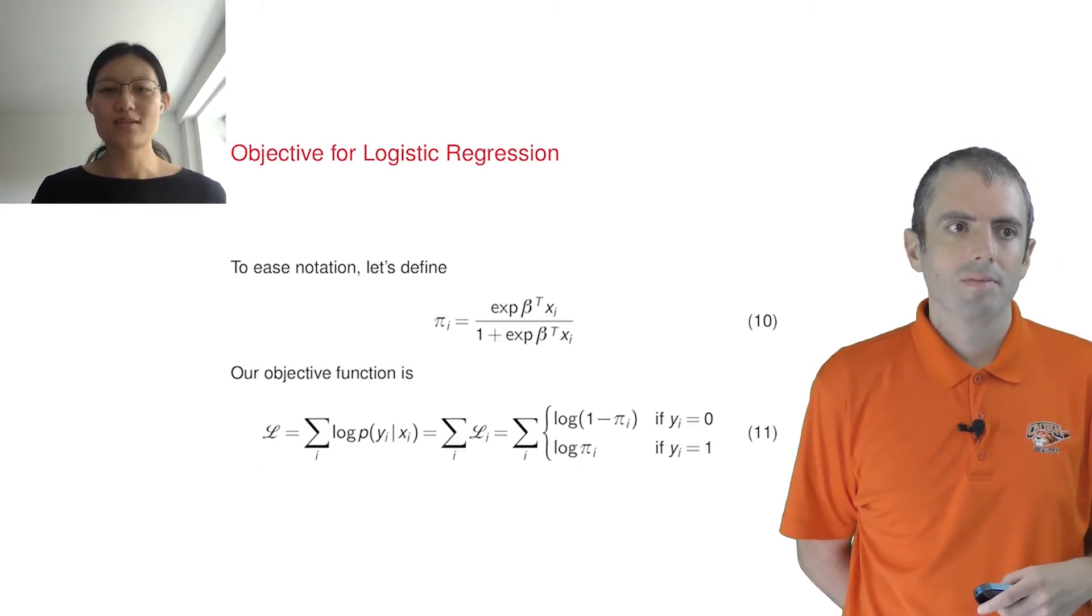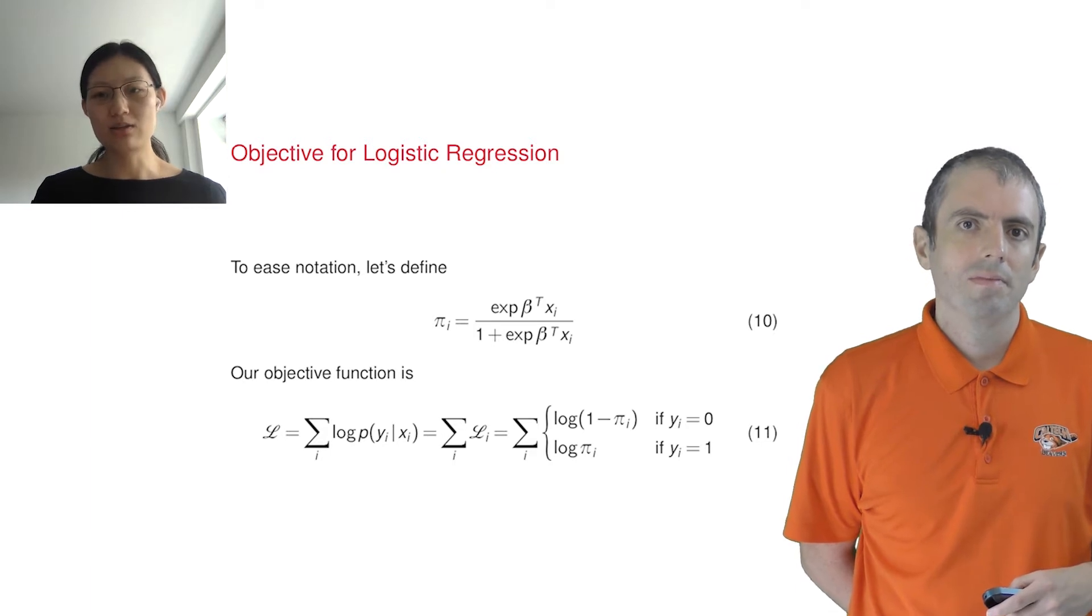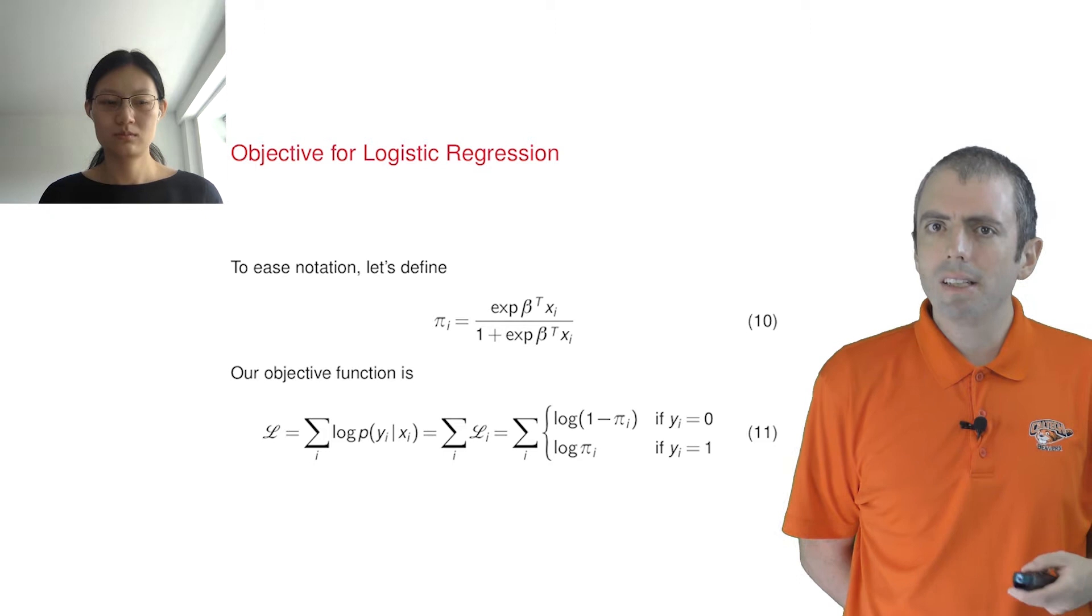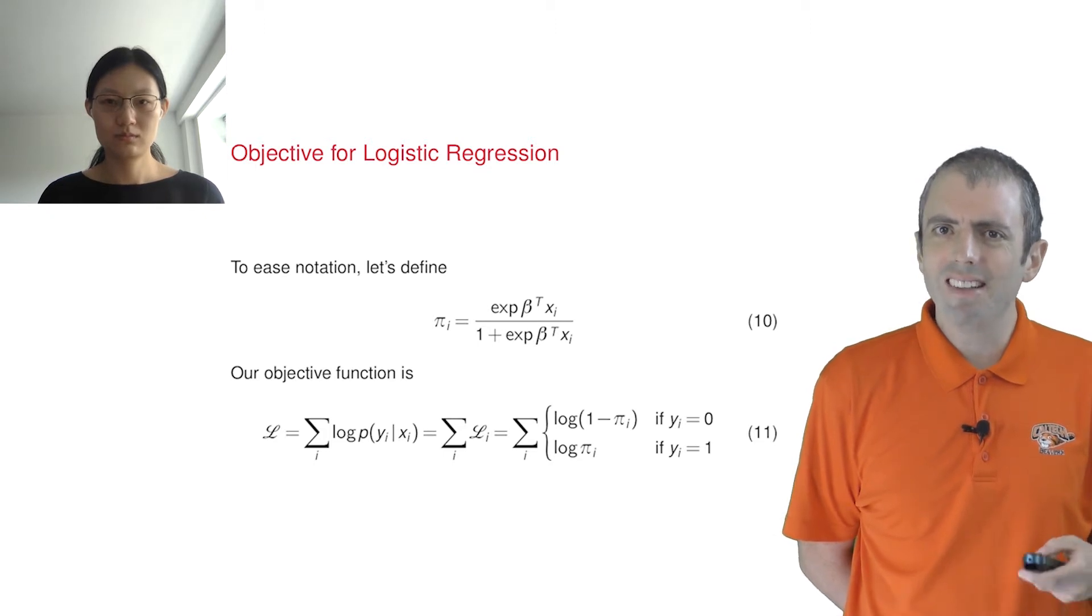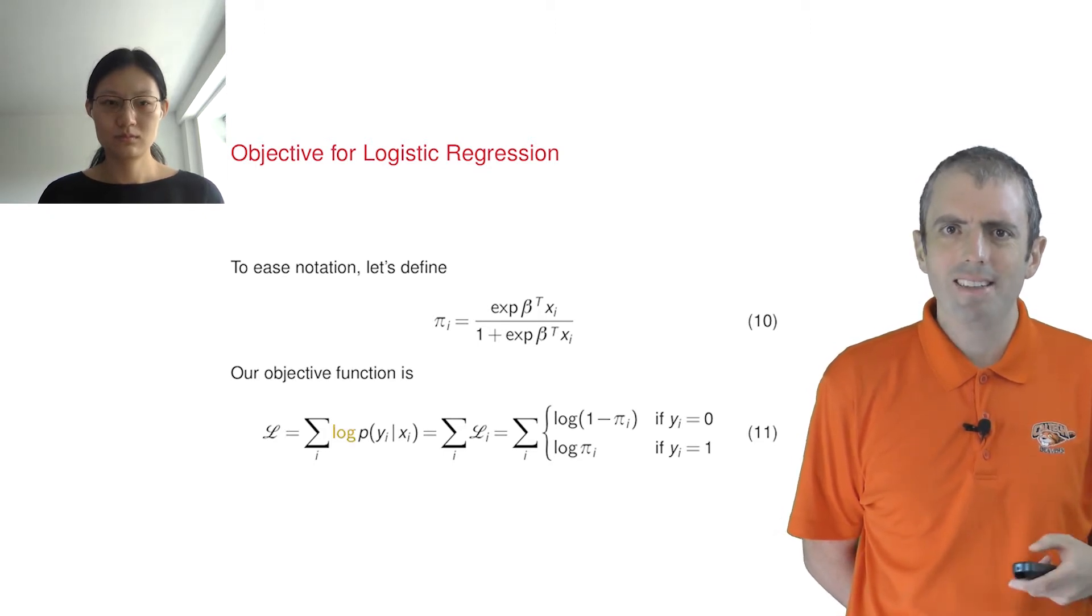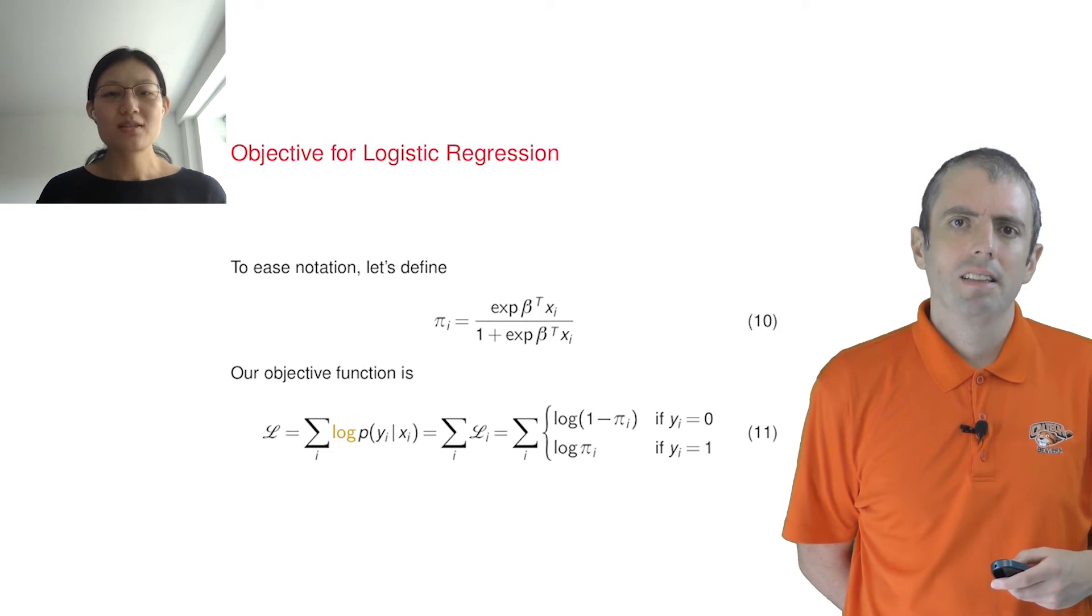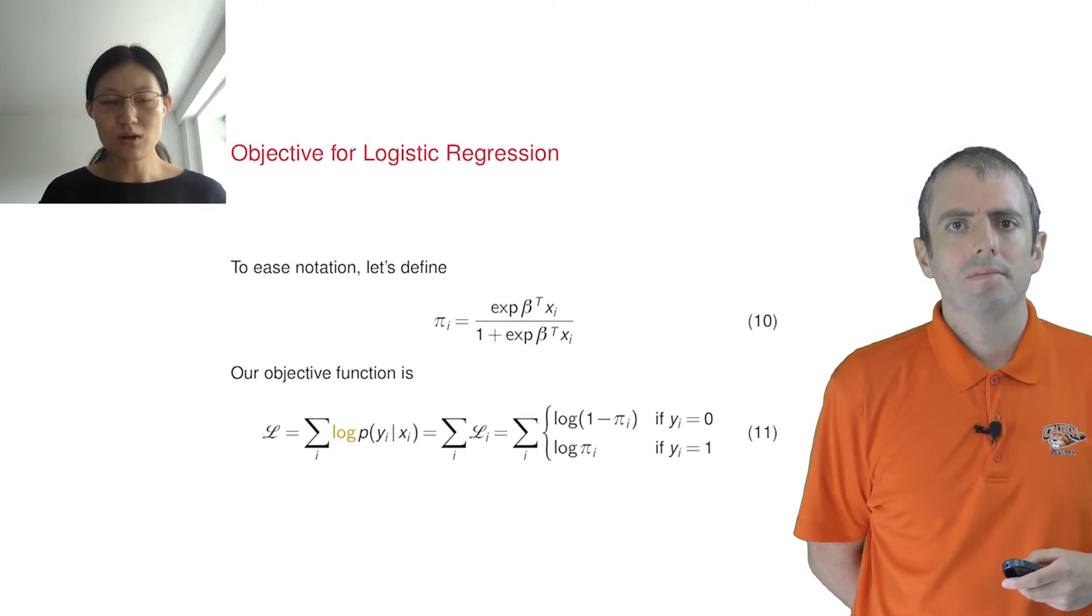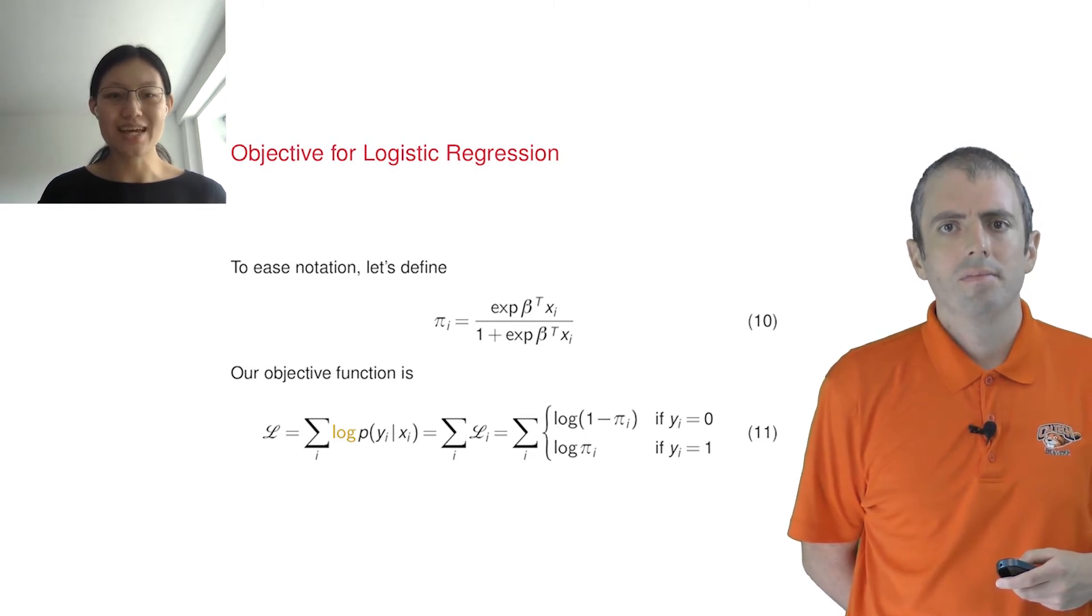It's a function of your weights for logistic regression and your training data. This looks a little like the prediction equation, but now there's this logarithm function in there. Why is that? This represents the probability of the training data labels, given our logistic regression model and training data input x.